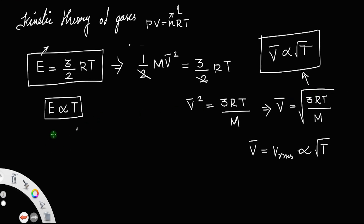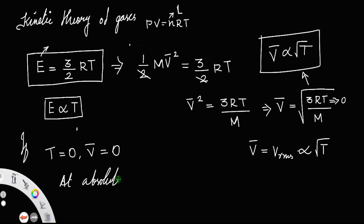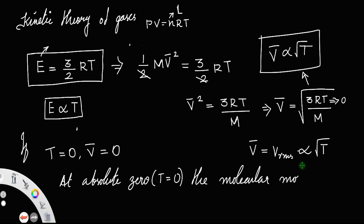If we consider the condition T = 0, then v = 0. That is why we say at absolute zero, when temperature equals 0, molecular motion stops completely, and the molecule possesses no kinetic energy.